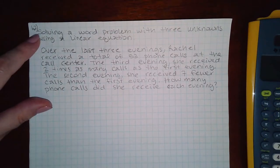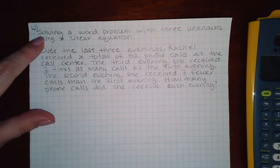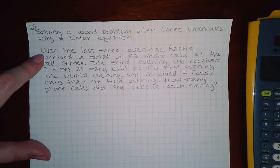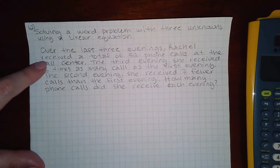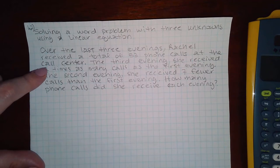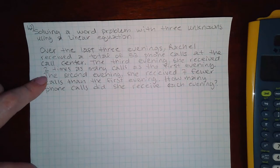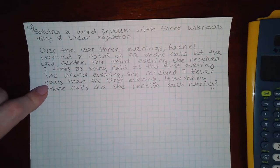Okay, this is 1.2, solving a word problem with three unknowns using a linear equation. The problem reads: over the last three evenings Rachel received a total of 53 phone calls at the call center. The third evening she received two times as many calls as the first evening. The second evening she received seven fewer calls than the first evening.